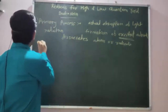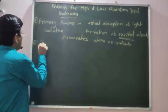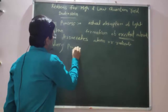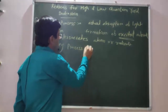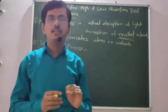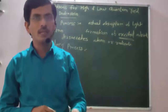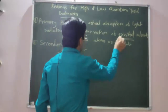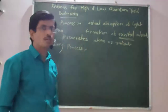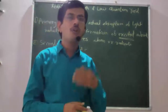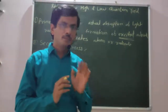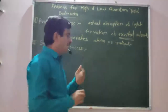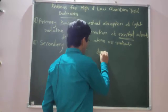This is about the primary process of photochemical reaction. Now, in the secondary process, the products of primary processes are involved in the secondary process. This secondary process may take place in the dark as well.